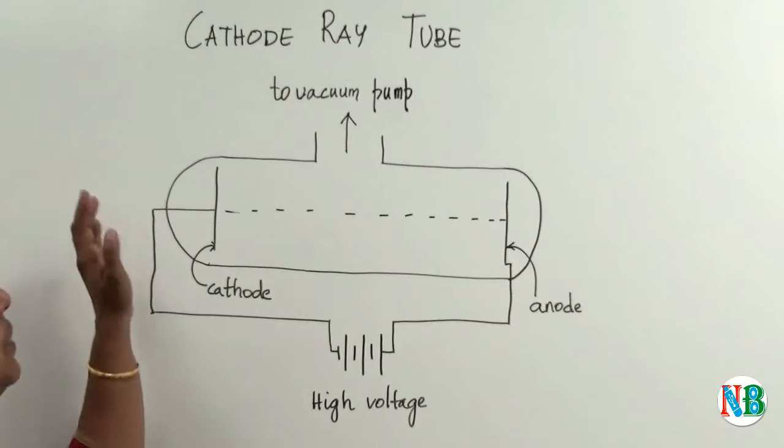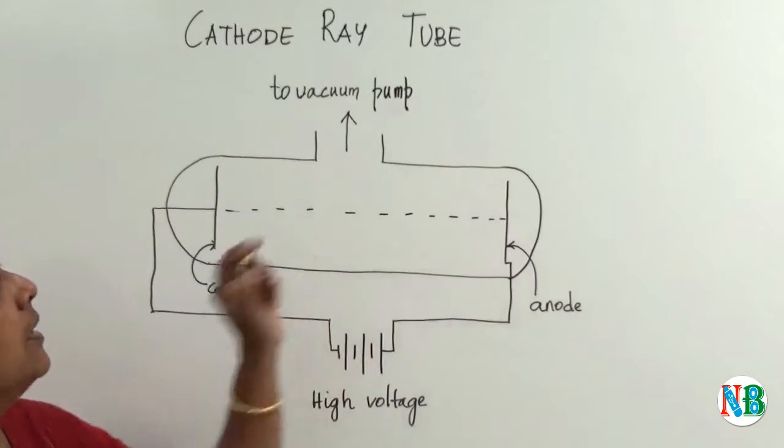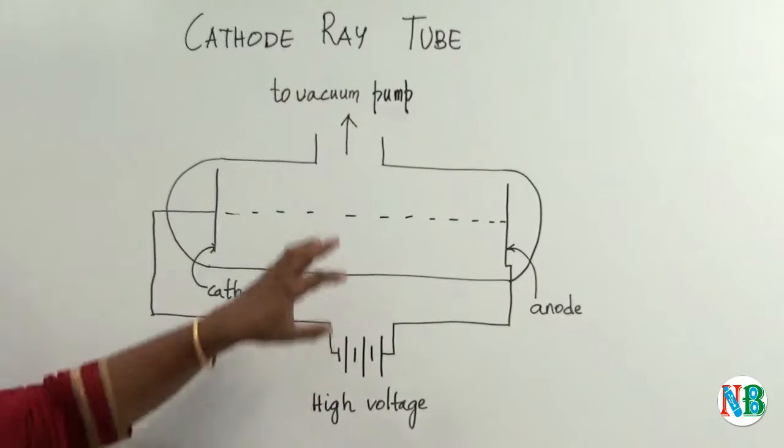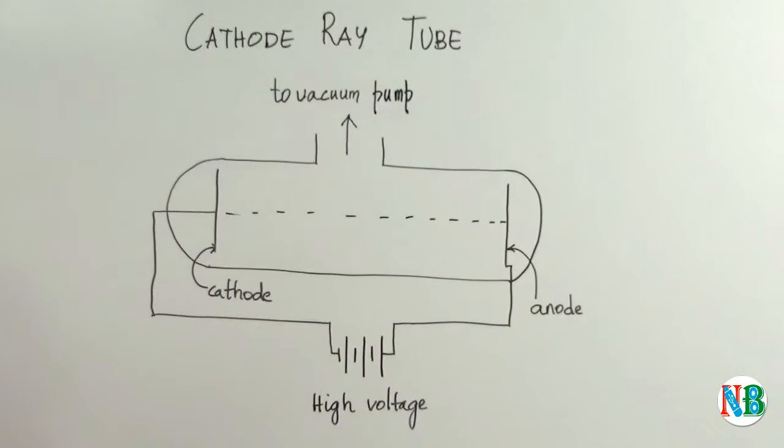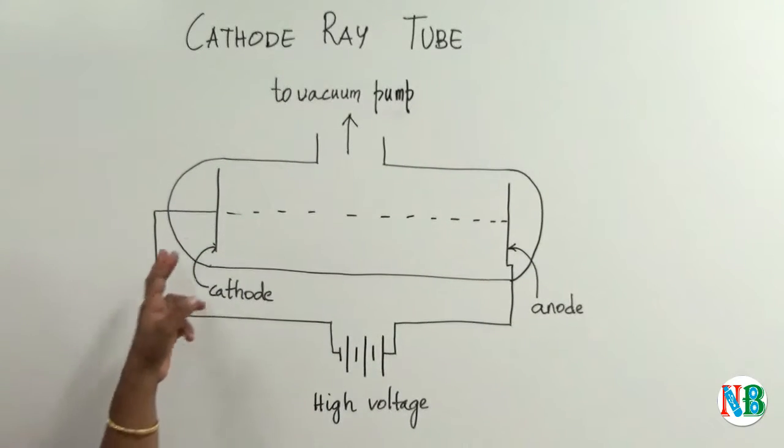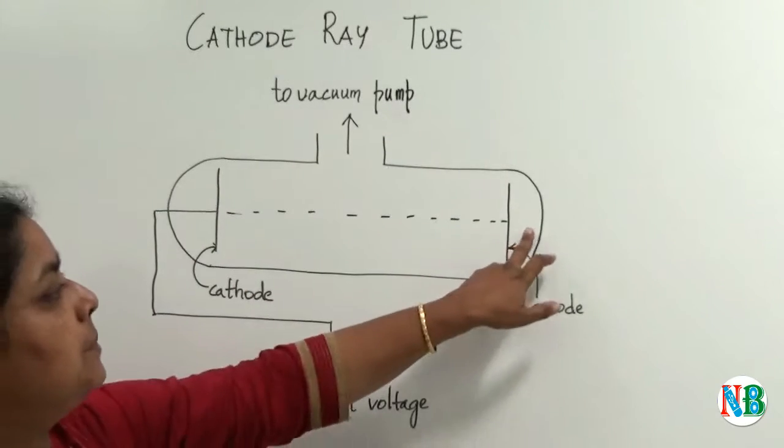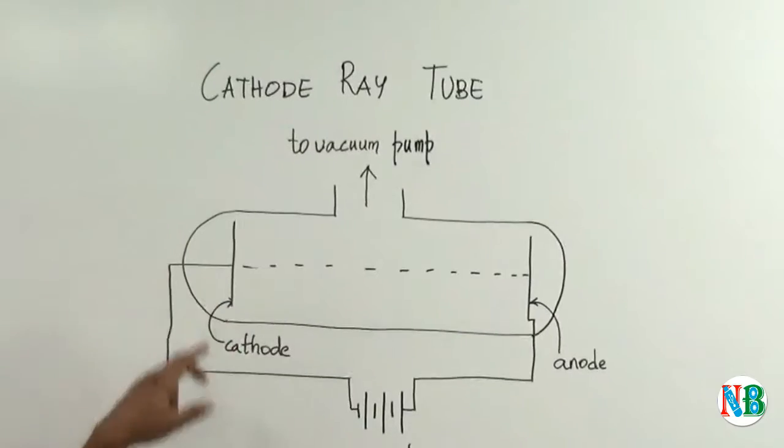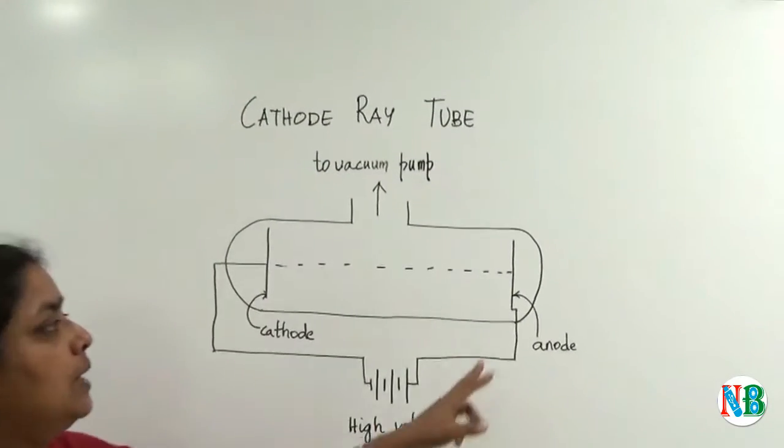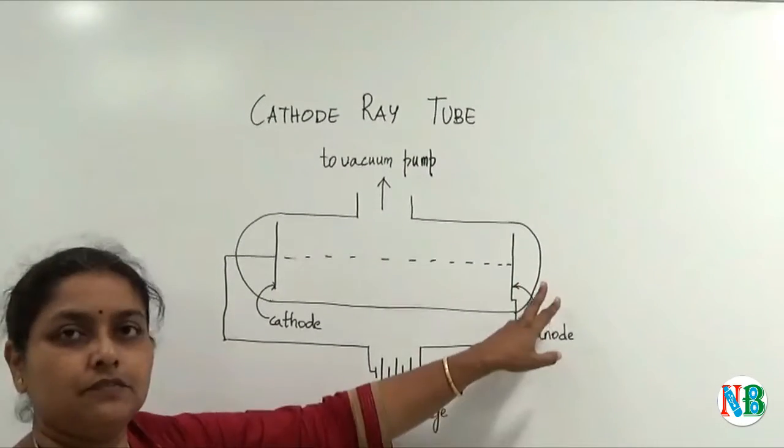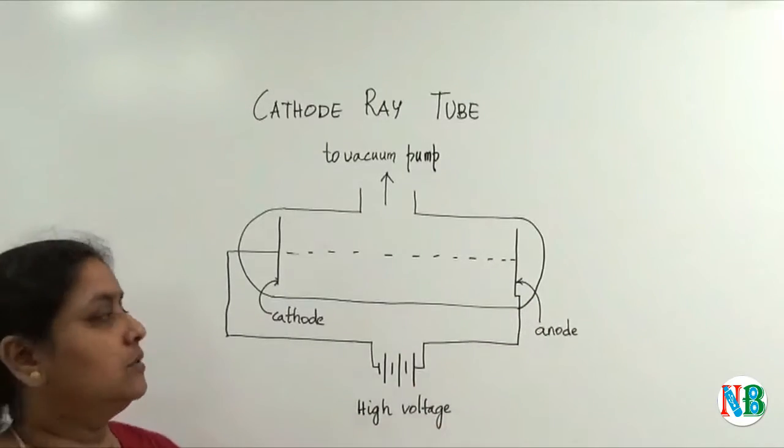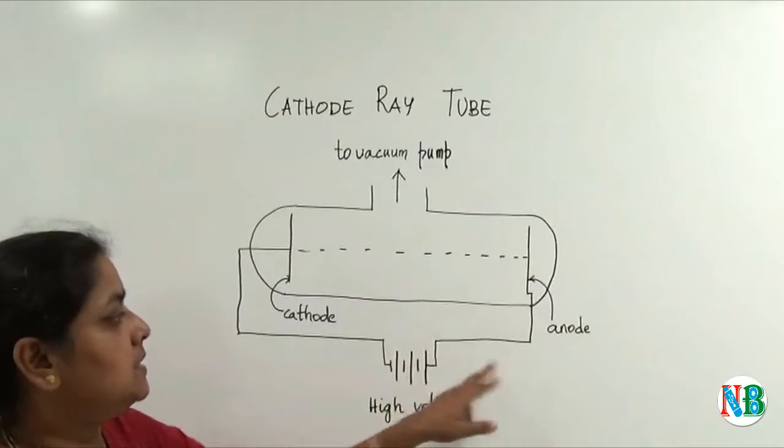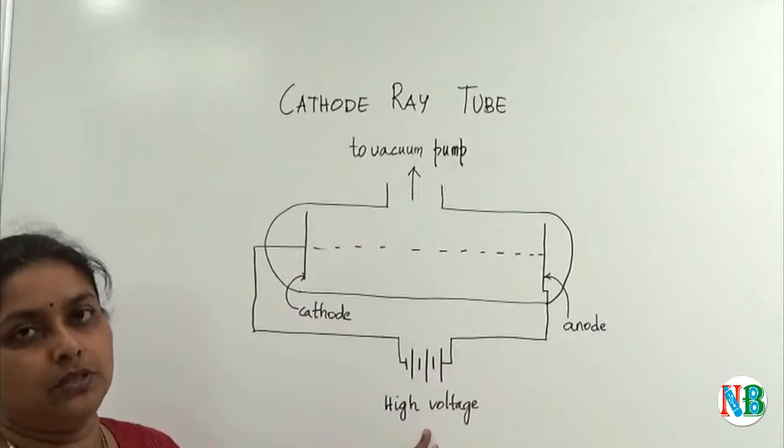A cathode ray tube is a glass tube connected to a vacuum pump to keep the air inside partially vacuumized. It has two thin metal pieces on either side. One metal piece is negatively charged and called the cathode. One more metal piece is positively charged and called the anode. These two metal pieces are connected to a high voltage current.